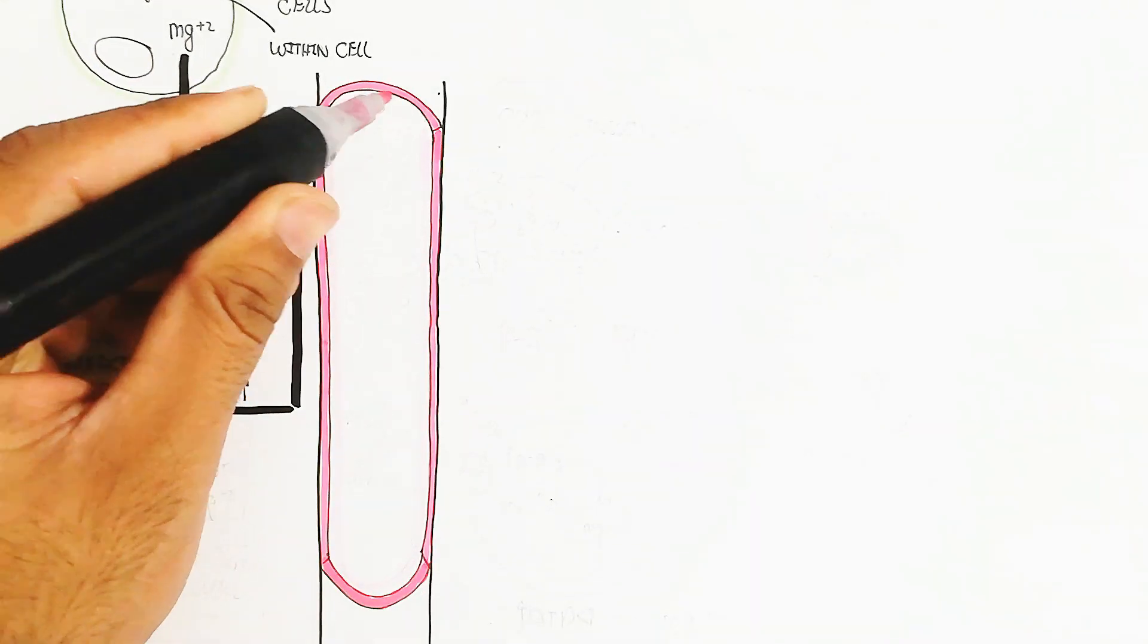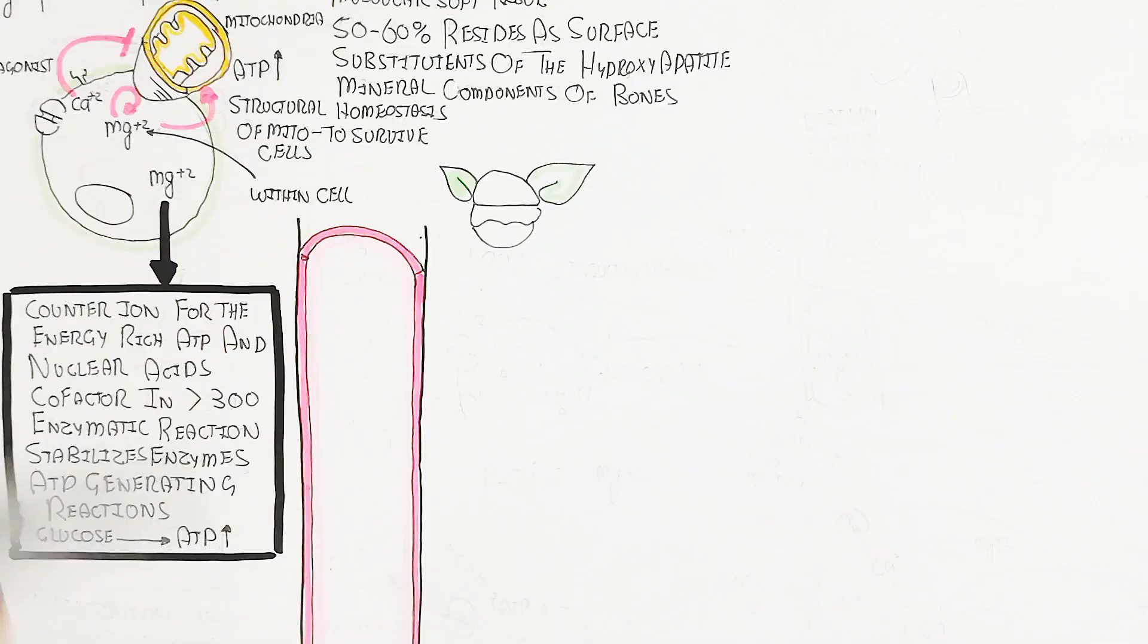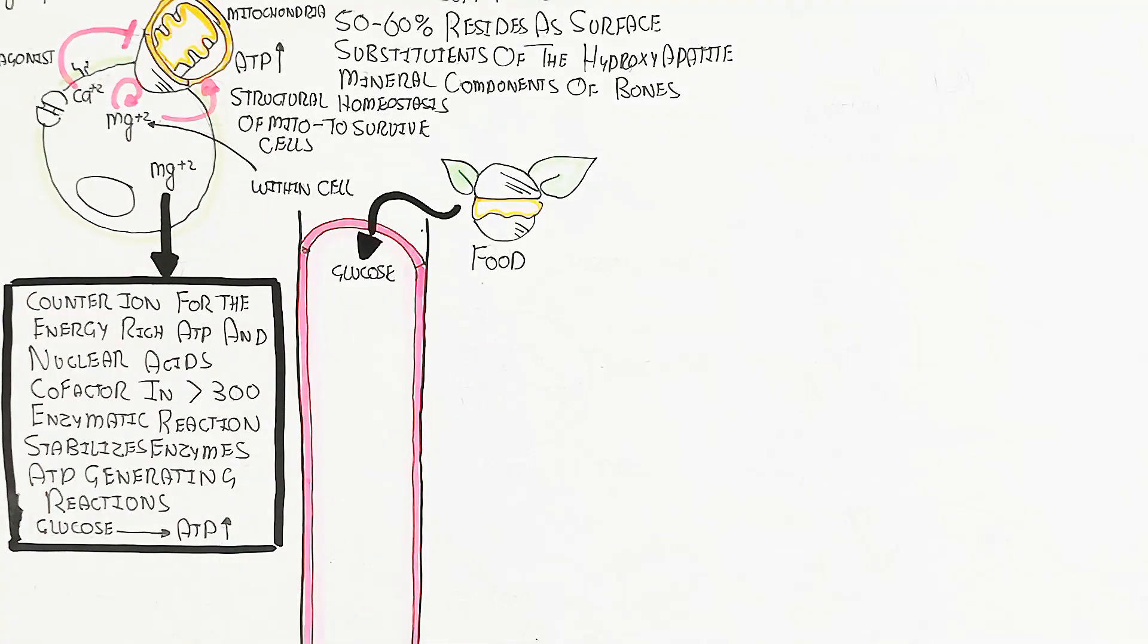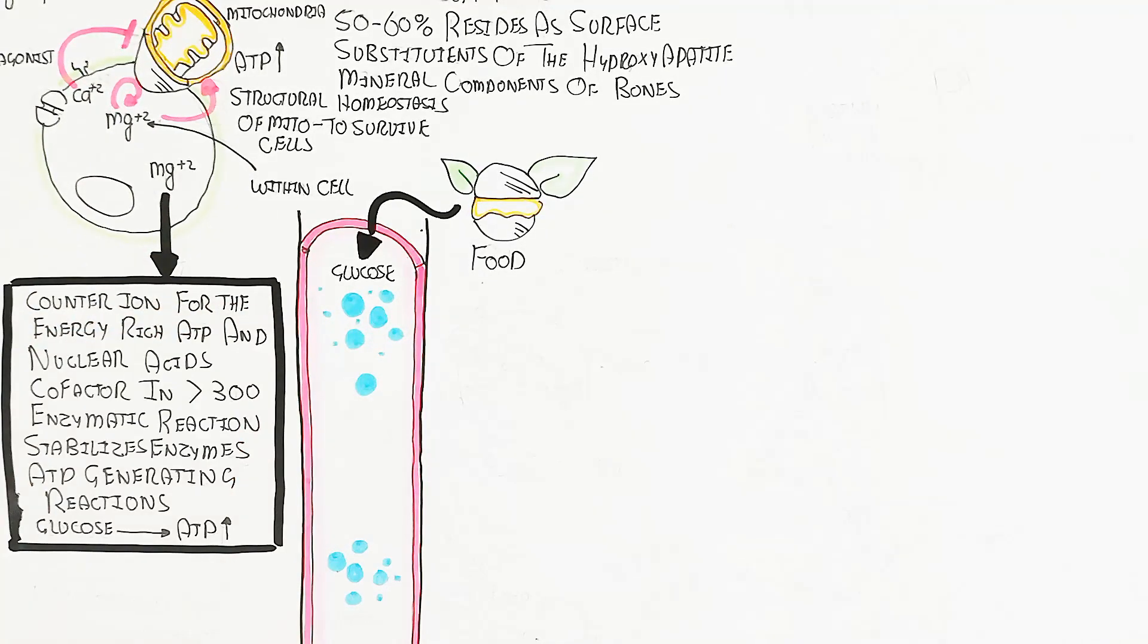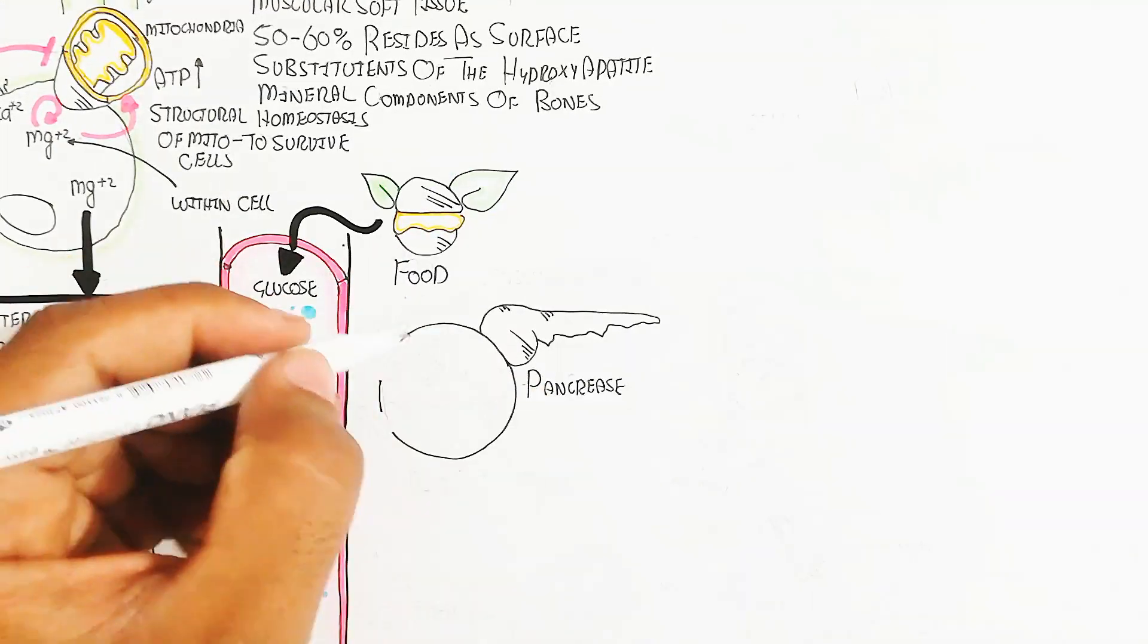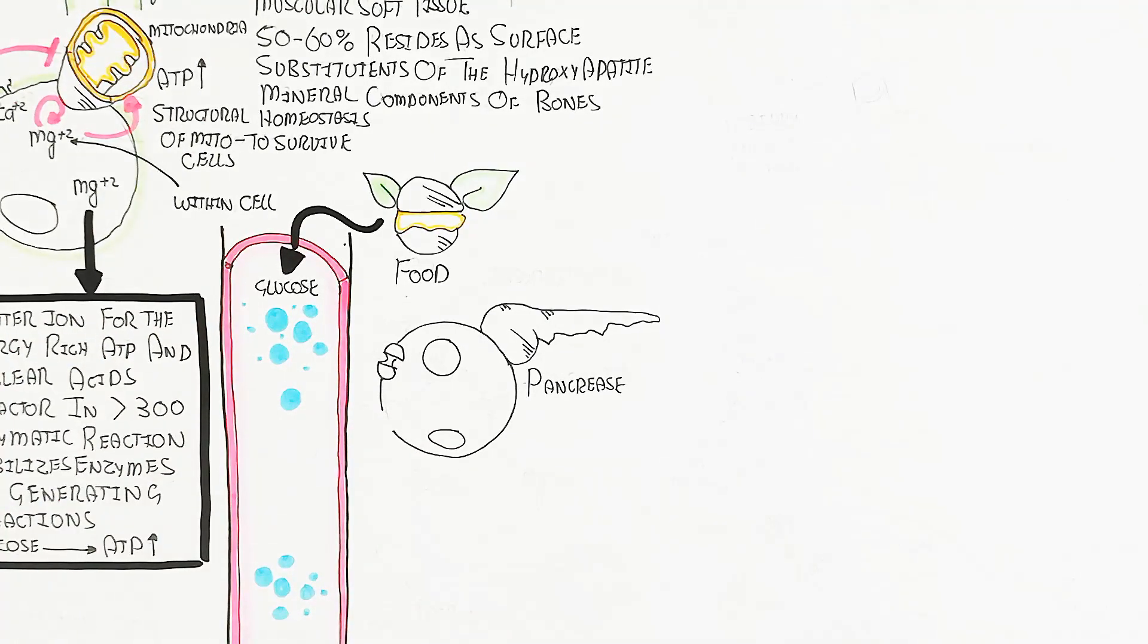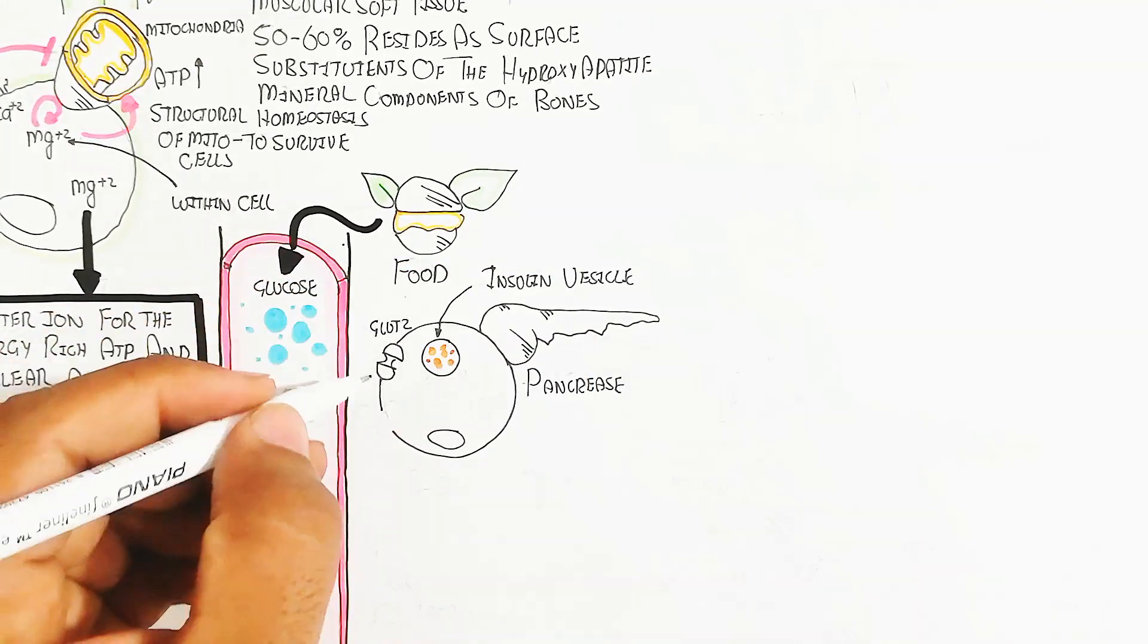This is the blood circulatory system. When you eat food containing magnesium, glucose and magnesium enter the blood circulatory system. The pancreas responds when glucose rises, causing hyperglycemia. Glucose moves through the glucose channel of the beta cell of the pancreas, leading to increased ATP, and calcium will rise.